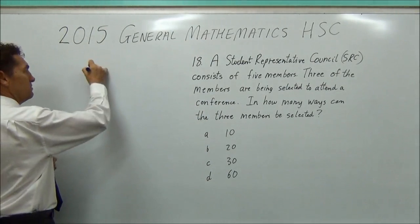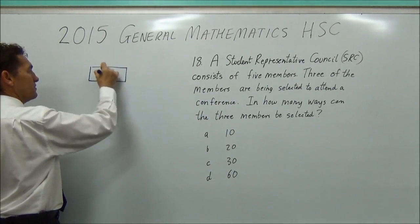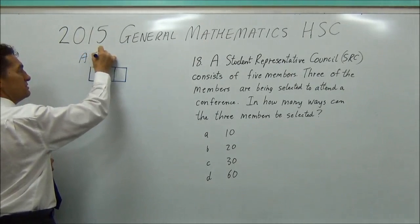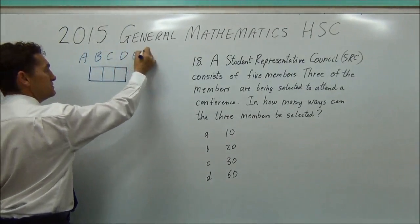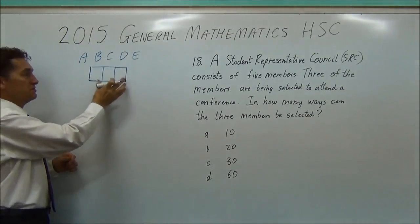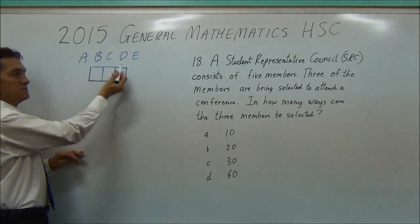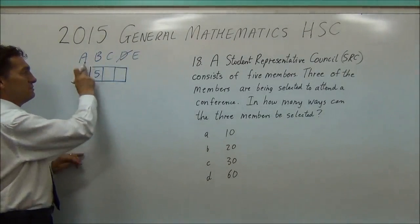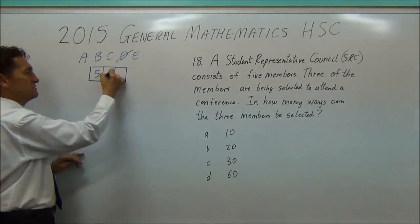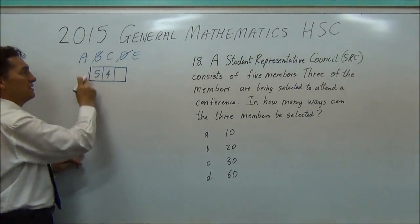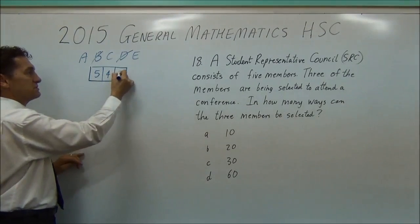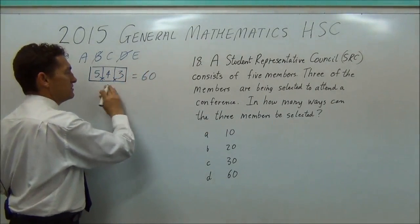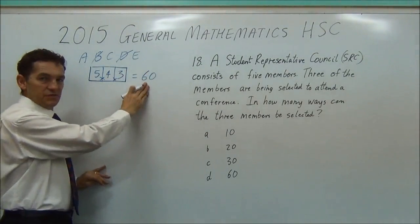In how many ways can I select three members? Well, I want to pick. I've got three spots to fill, and I've got five people to choose from: A, B, C, D and E. So I want to put these people into these boxes. How many choices have I got for the first box? Well, five of them. Pick one. That'll do. How many choices have I got for the second box? Four. How many choices have I got for the third box? Three. So really, I could have picked them in sixty different ways.